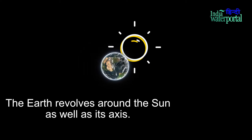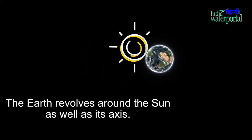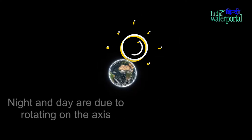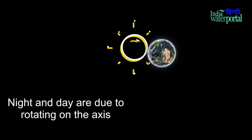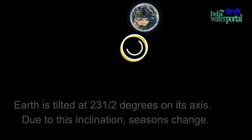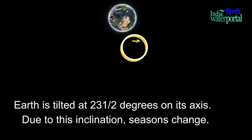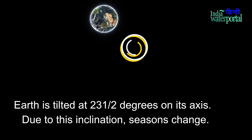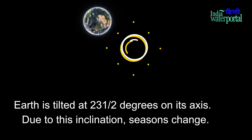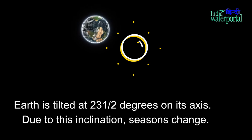What is the season change? The Earth revolves around the Sun as well as its axis. Night and day are due to rotating on the axis. Earth is tilted at 23.5 degrees on its axis. Due to this inclination, seasons change.